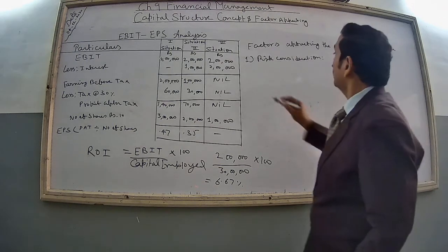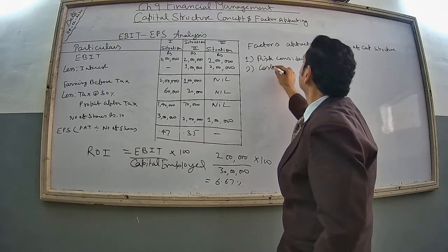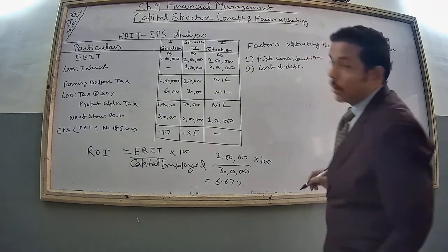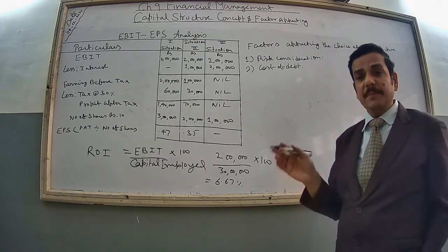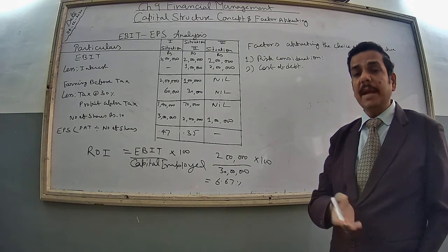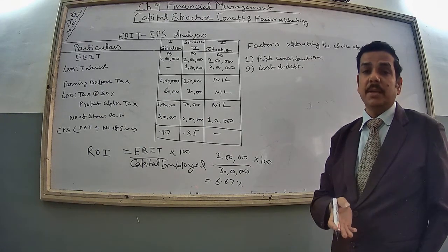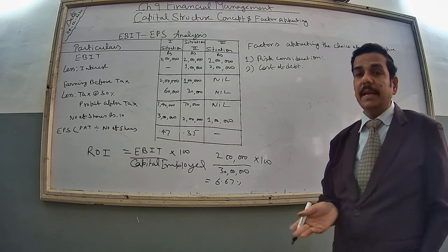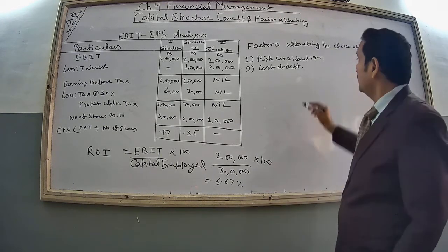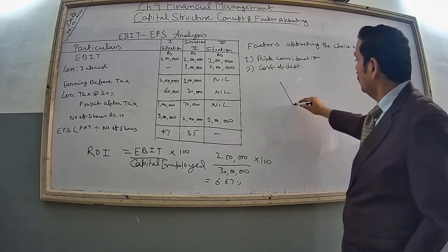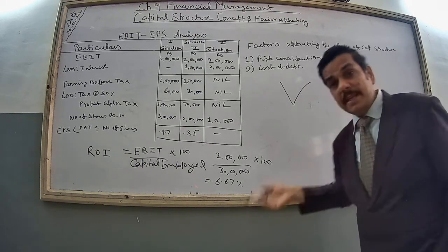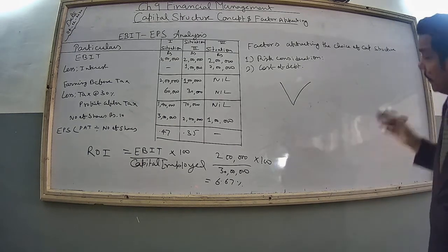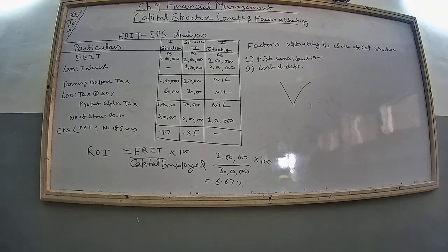Second factor is cost of debt. You have to always see the market situation. Whenever the market is sluggish or showing a downward trend — when business is low — if you consider the situation of 2008, there was a huge slowdown in our economy. Whenever there is a slowdown, plenty of funds are available and taking a loan at that time is very good. But now the economy is in recovery mode. As it recovers, debt will become costlier. So you have to always assess whether you are in a situation of favorable or unfavorable financial leverage.